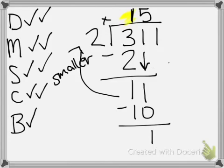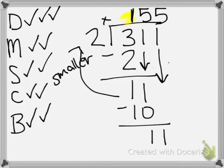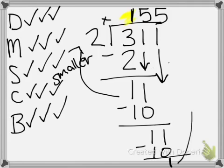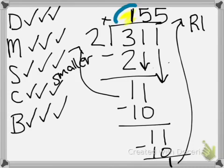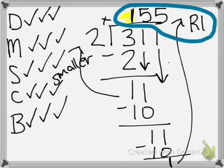Check: is 1 smaller than 2? Yes. Bring down the next digit. Now we're all the way back up to divide again. How many 2s go into 11? Hopefully they remember from the previous step that 5 goes into that. Now 5 times 2 is 10. Subtract, and I have 1 left. Now they need to bring down — if there's nothing to bring down, that is left over and is your remainder. So your answer is 155 remainder 1.